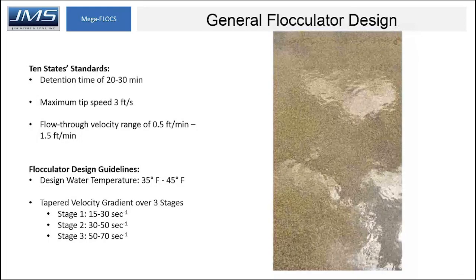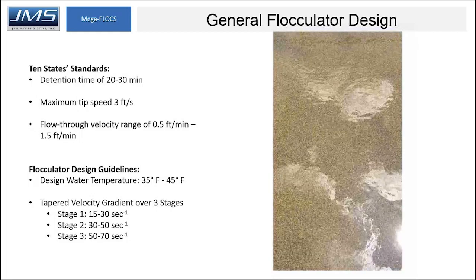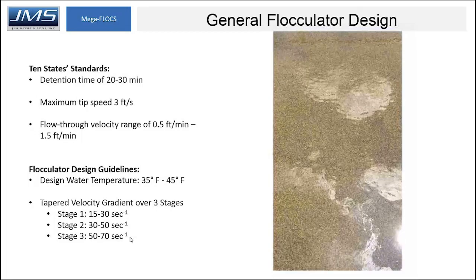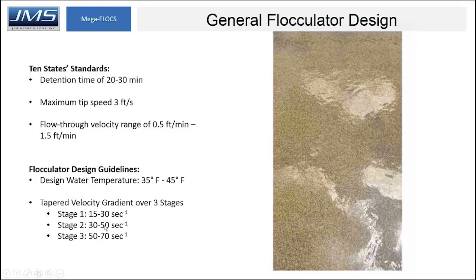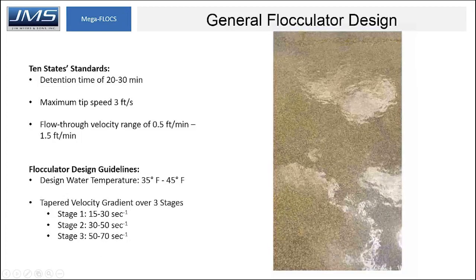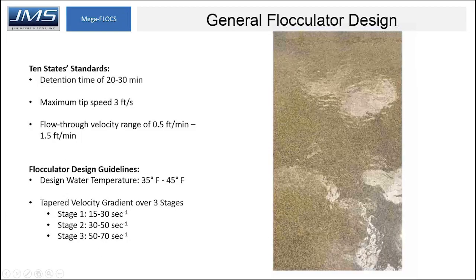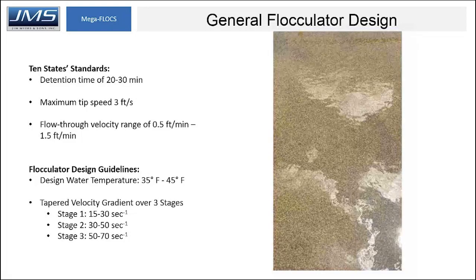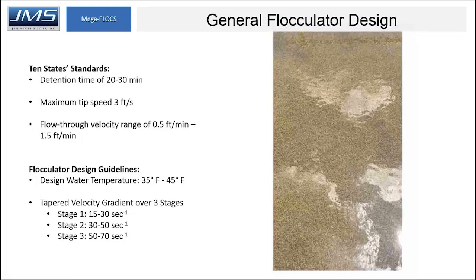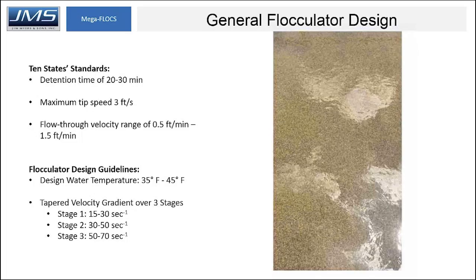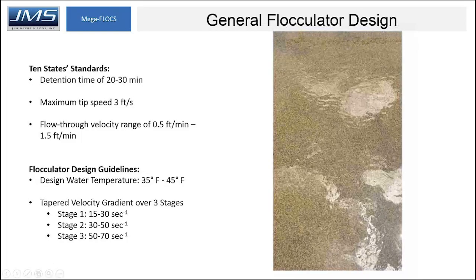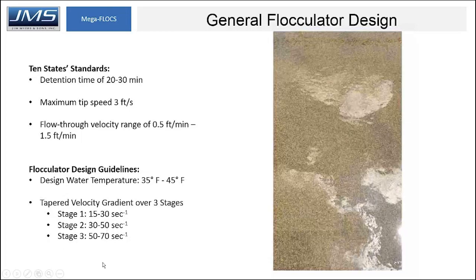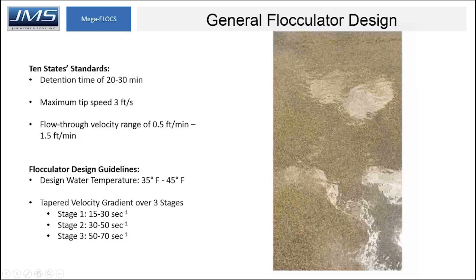No velocity gradient guidelines are given by the Ten State Standards, but for water treatment plants a velocity gradient between 70 to 15 is acceptable and provides the best results. Temperature is also not specified, but typically designed for anywhere between 35 to 45 degrees Fahrenheit. As you can see in this picture, a large, fluffy, easily settable floc particle is the goal of any flocculator.